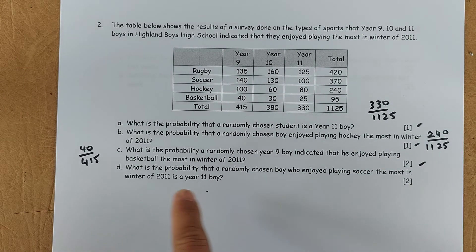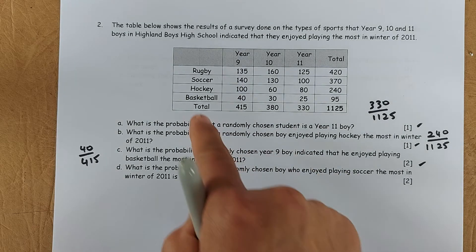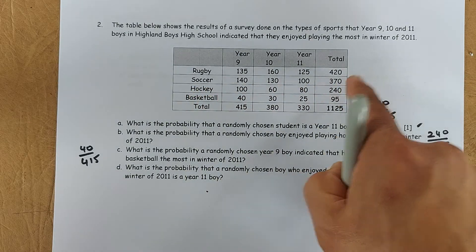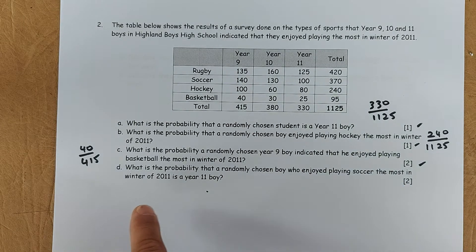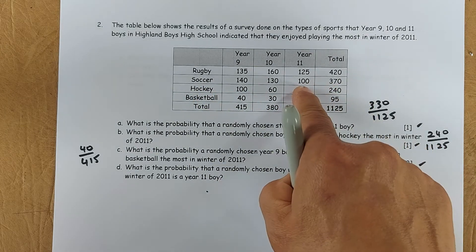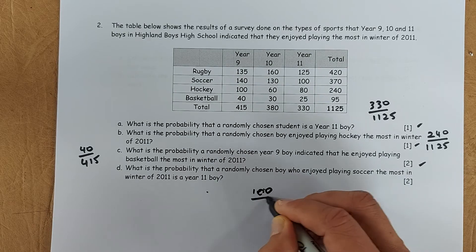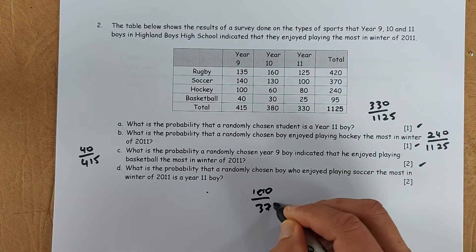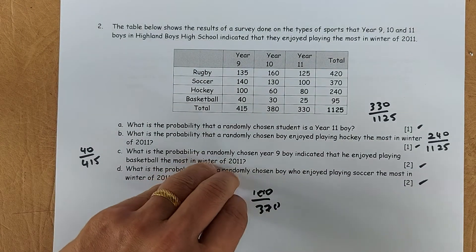And the last question. What is the probability that the randomly chosen boys who enjoy playing soccer, we are only looking at the soccer boys, so there are 370 of them, is a year 11 boy. So soccer boys are 370, year 11 is 100. So the answer is going to be 100 out of 370. And that will give you another simple 2 marks. So a total of 6 marks in this paper. Not too bad, right? Great.